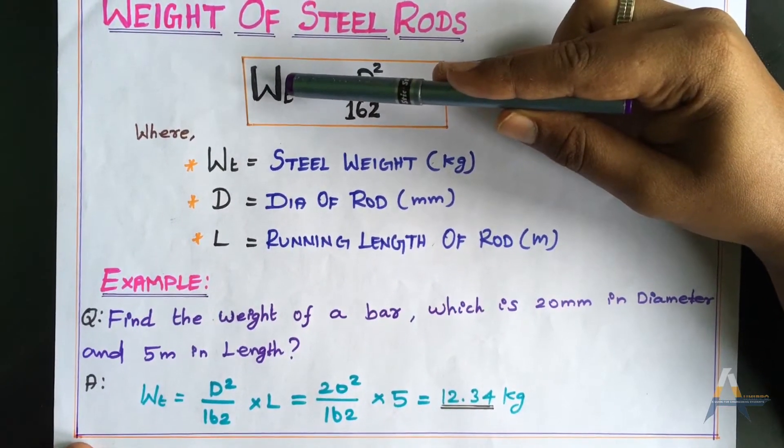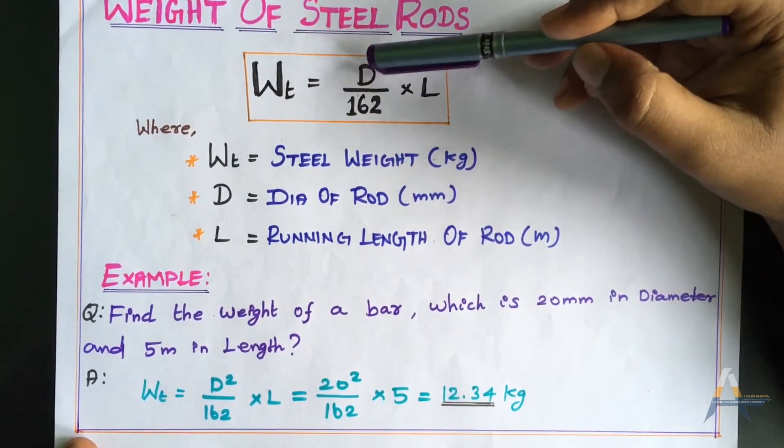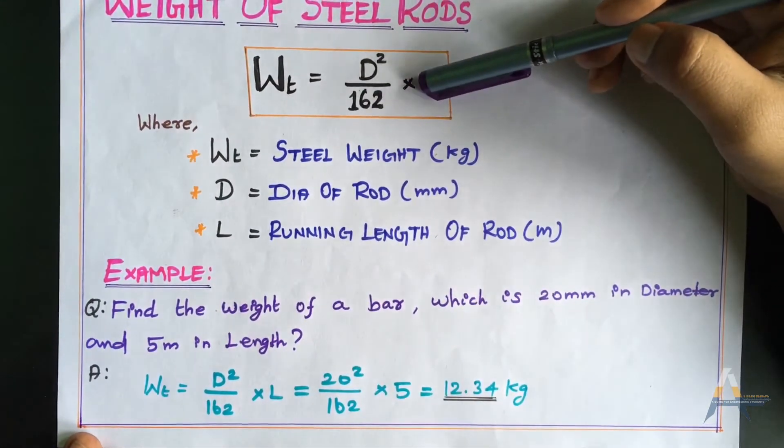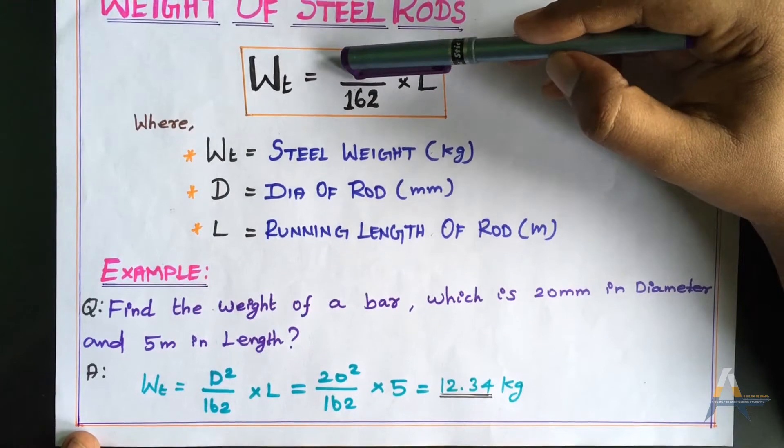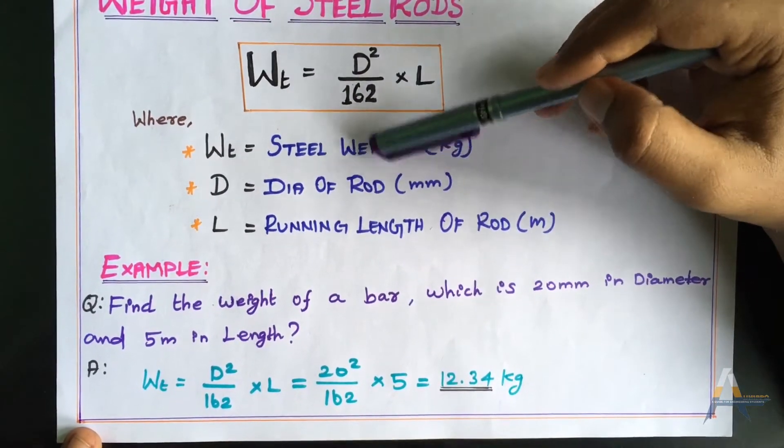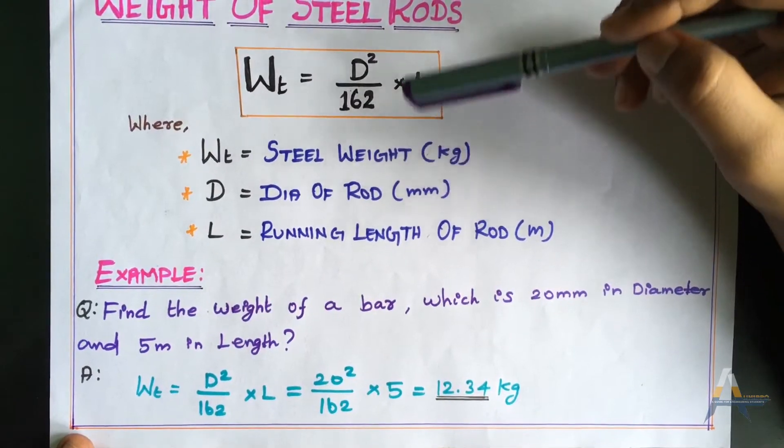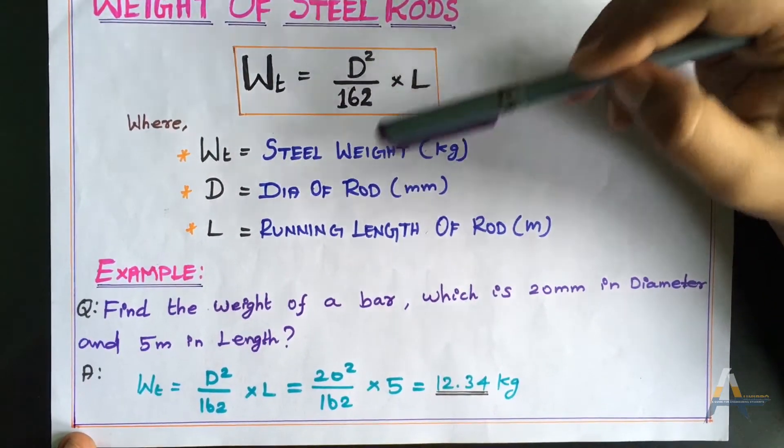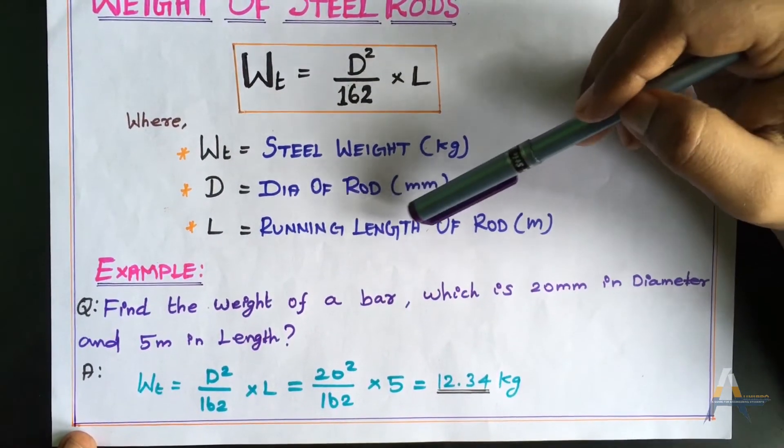Weight of Steel Wt equals D² divided by 162 times L, where D is the diameter of the rod in mm and L is the running length of the rod in meters.